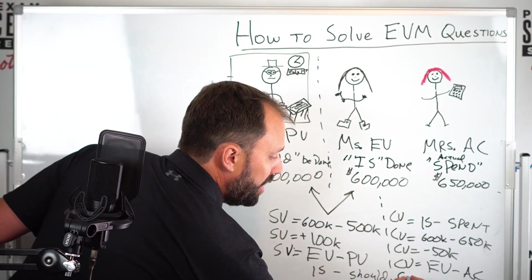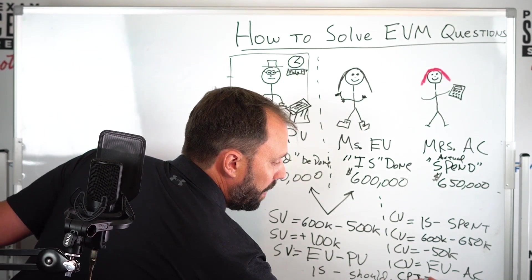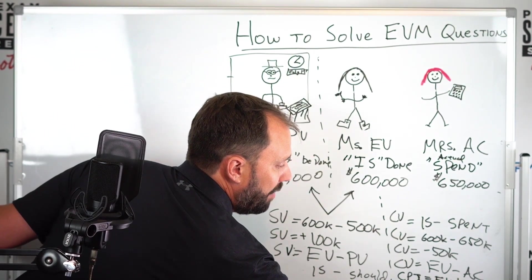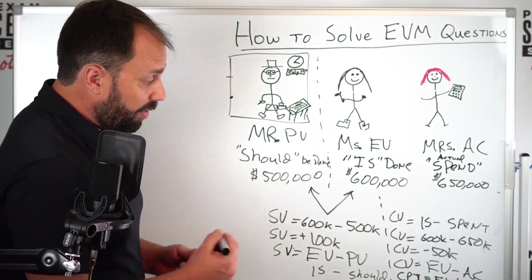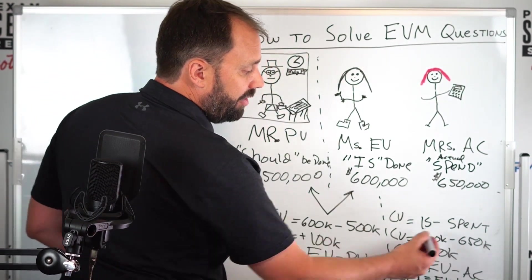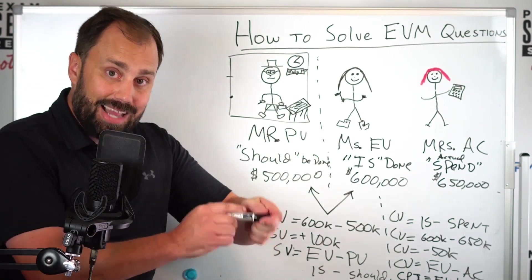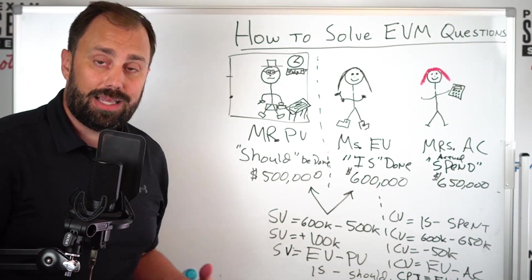Right here, the CPI - what's the equation? You know it: EV divided by AC. Simple. And we could do the math: 600 divided by 650. That's less than one, right? That's a bad thing.